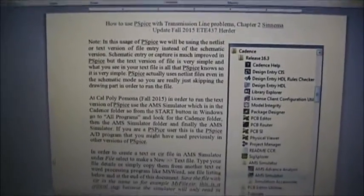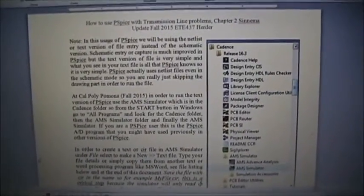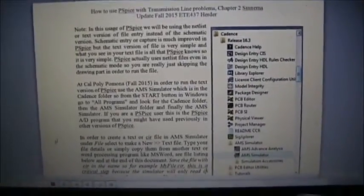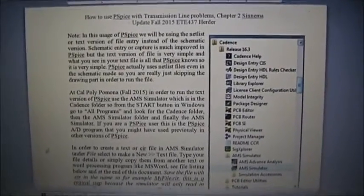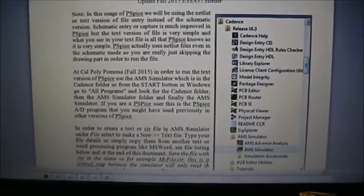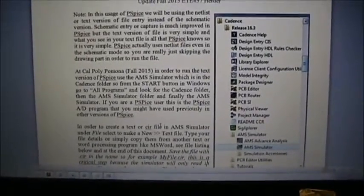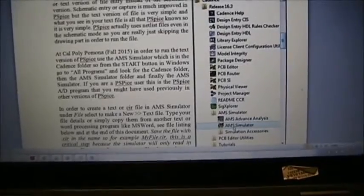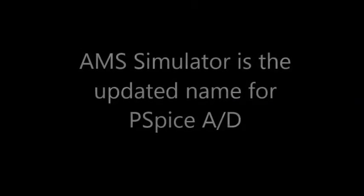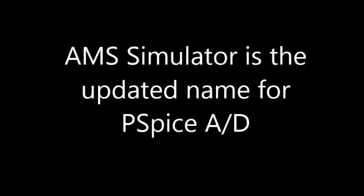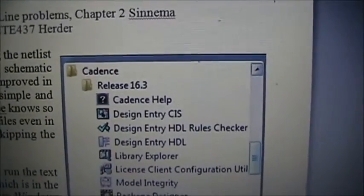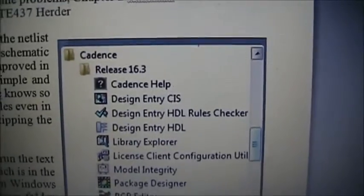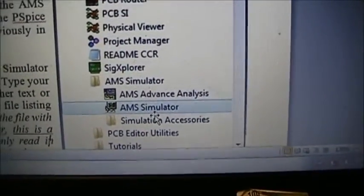So, here's a copy of the handout you'll be getting, which goes through the process to use PSPICE in the labs at Cal Poly. You can also do it at home using multi-sim or other versions of PSPICE. To create a file, a text file or circuit file, to be used in the program called AMS Simulator, which is within Cadence, which is the company that owns PSPICE. Look for Cadence AMS Simulator and run that program.